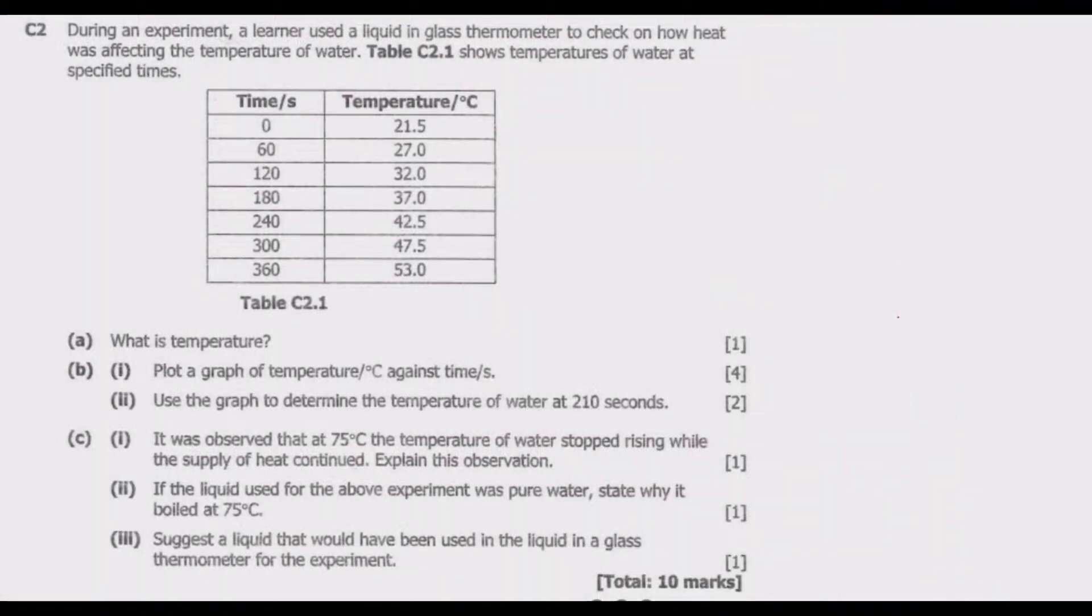Welcome viewers to another episode on ASUG 12 exams. In this episode we continue looking at section C of the August 2022 science paper 1. Let us look at question C2. During an experiment, a learner used a liquid in glass thermometer to check on how heat was affecting the temperature of water. Table C2.1 shows temperatures of water at specified times.